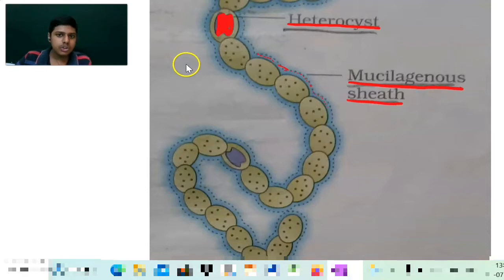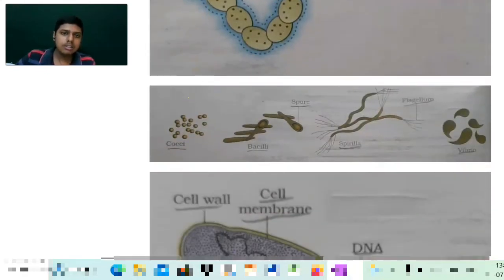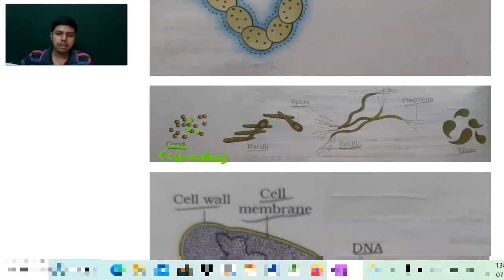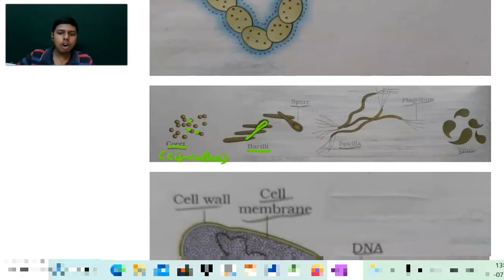Moving further, these are the structures showing the different types of bacteria. First of all you can see cocci — these are circular shaped bacteria, you can see the small circles. These are cocci. Now bacilli — they are the rod shaped bacteria. You can see this is more or less equivalent to a rod, so the bacilli are the rod shaped bacteria.